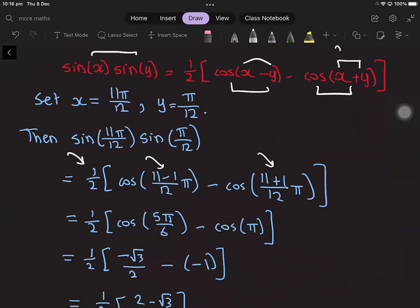And cos 5π over 6 is equal to minus square root 3 over 2, and cos π is equal to minus 1.